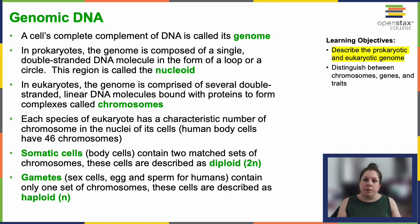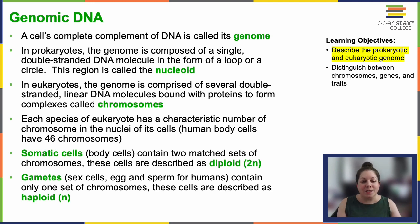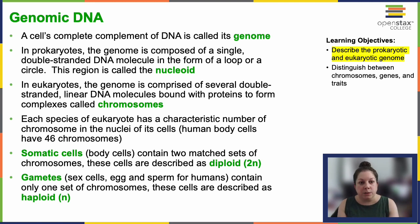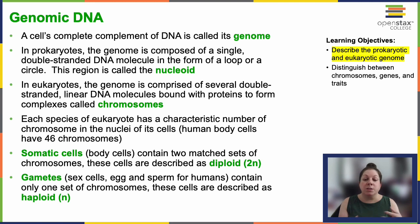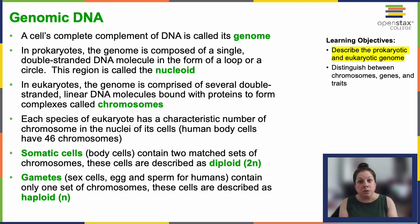Eukaryotes, on the other hand, possess multiple linear DNA molecules known as chromosomes. These linear strands of DNA are wrapped around proteins. Each species has a specific number of chromosomes present in its cells.